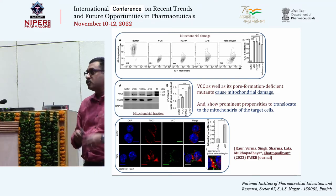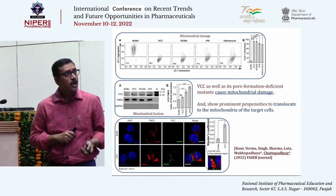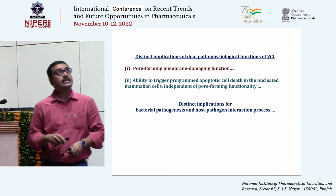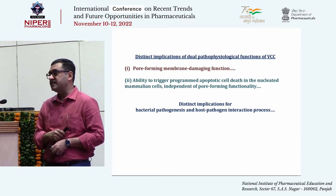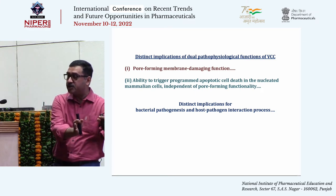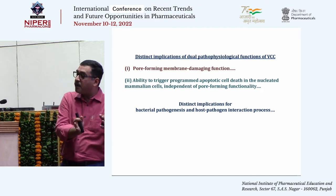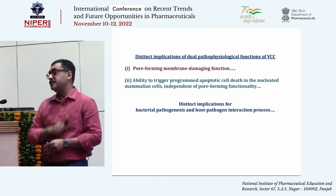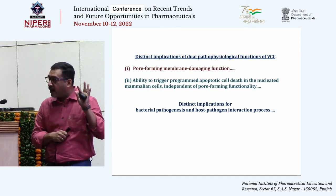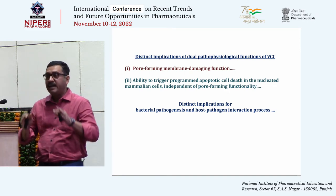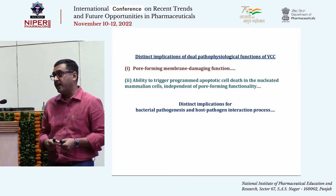Our speculation is that this mitochondrial migration of VCC may correlate with its ability to cause mitochondrial damage and trigger apoptotic features. Through our ongoing research we are pursuing this direction, and this study was very recently accepted in the FASEB Journal. Through this study, we deciphered distinct implications of the dual pathophysiological function of VCC: on one hand it can cause membrane damage leading to cell death, and even without pore formation it can still exert apoptotic cell death. We hypothesize these two functionalities may have distinct implications for pathophysiological responses during Vibrio cholerae infection in the host.